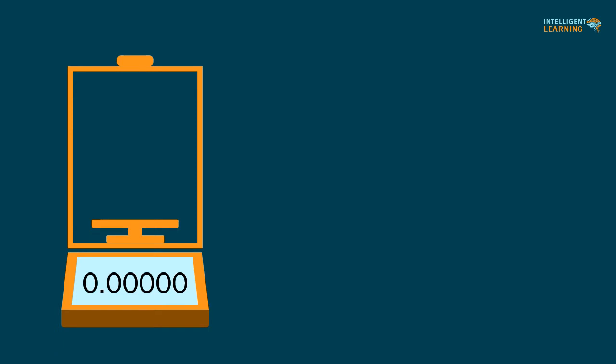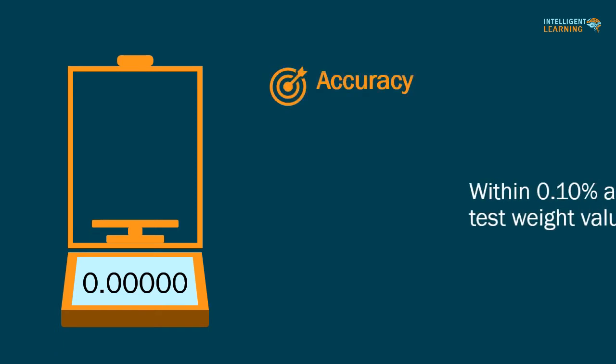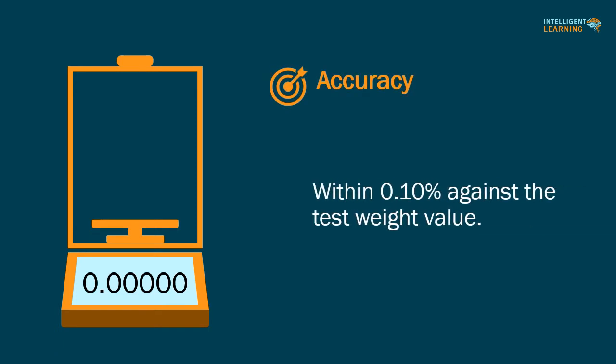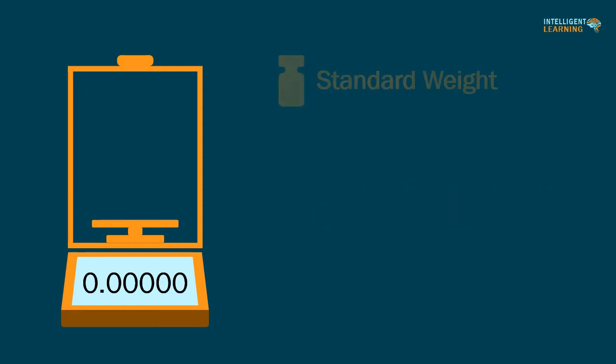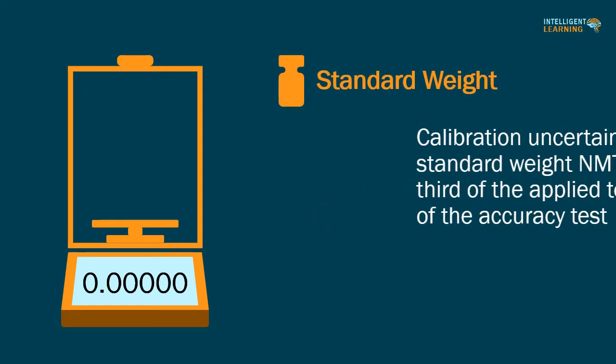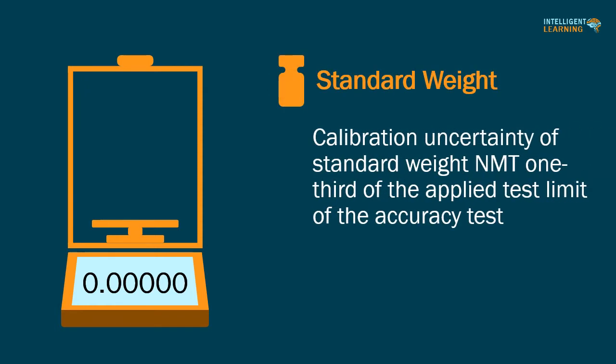The accuracy of the balance should be within 0.10% against the test weight value. The standard weight's maximum permissible error, or alternatively its calibration uncertainty, shall be not more than one-third of the applied test limit of the accuracy test.